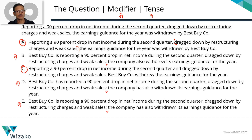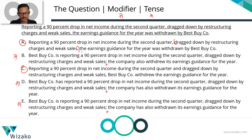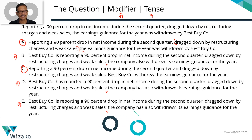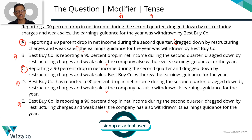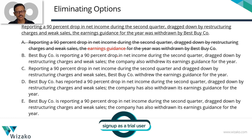The moment you see a modifier, the obvious question is: who or what was reporting a 90% drop? The company was reporting a 90% drop — the company here is BestBuyCo. So BestBuyCo should be the word placed next to this modifier, whereas we have 'the earnings guidance' here. That is a misplaced modifier error — the word that should be modified is not placed next to the modifier. So A can be eliminated on account of misplaced modifier.